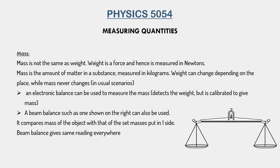The next physical quantity we will talk about is mass. Before we talk about how to measure mass accurately, we need a clear understanding of the difference between mass and weight, because in everyday language we often use these words interchangeably. Weight is a force and its SI unit is newtons, whereas the SI unit of mass is kilograms. Mass is the amount of matter in a substance — logically, this does not change because it does not depend on location.